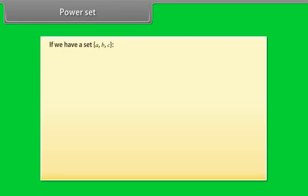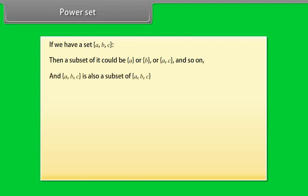Power set. If we have a set A, B, C, then a subset of it could be A or B or A, C and so on. And A, B, C is also a subset of A, B, C. And the empty set is also a subset of A, B, C.